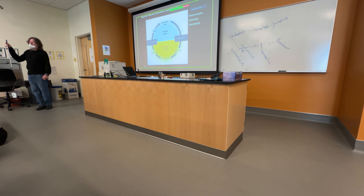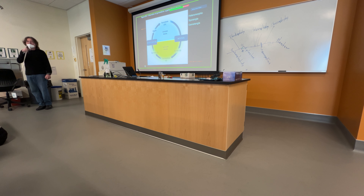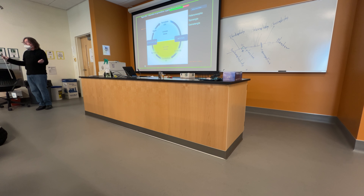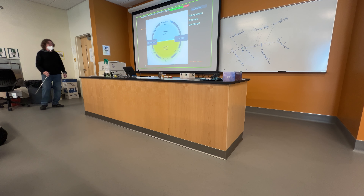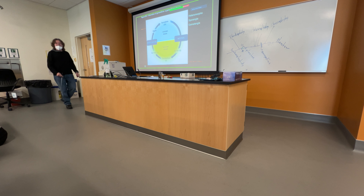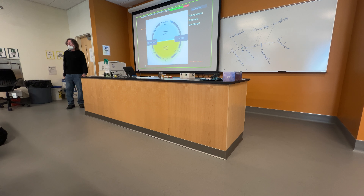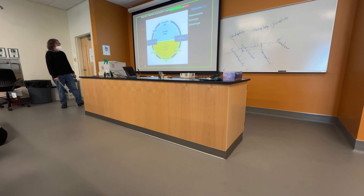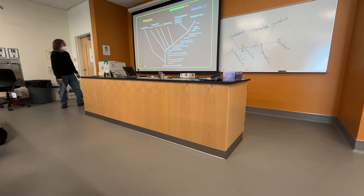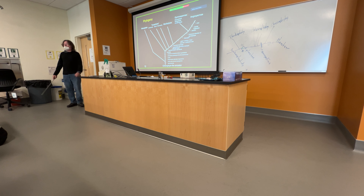All of these plants will have this type of cycle. What differs as we look at the various groups of plants is what the gametangia and sporangia look like, but they all have this heteromorphic alternation of generations.